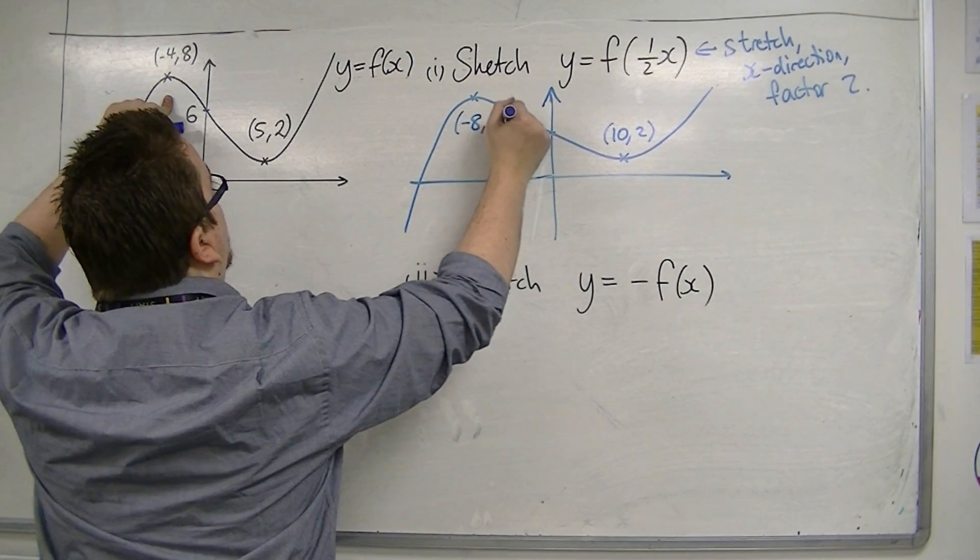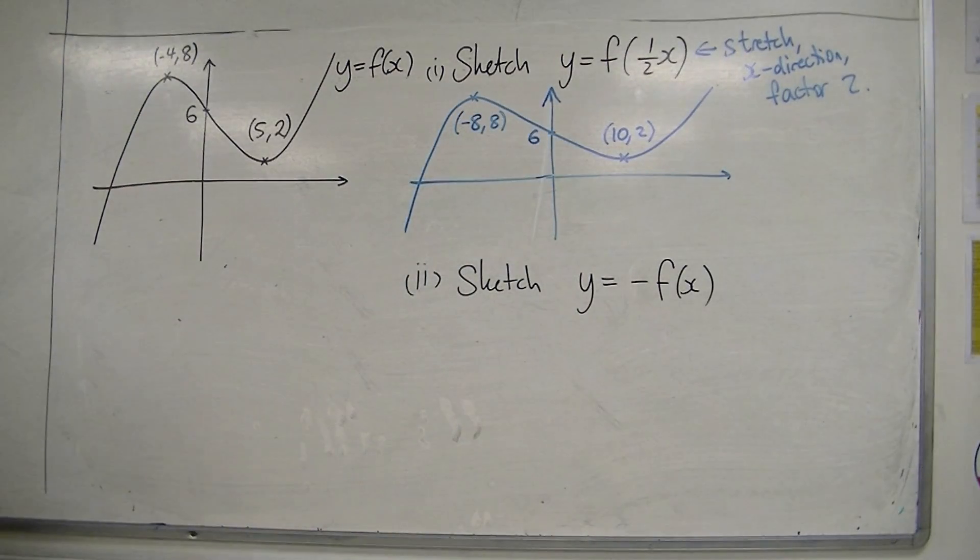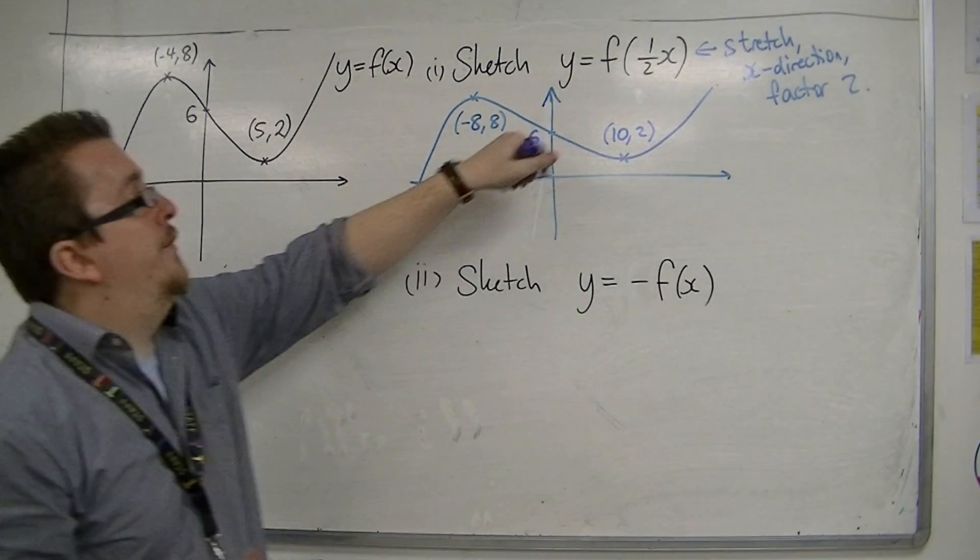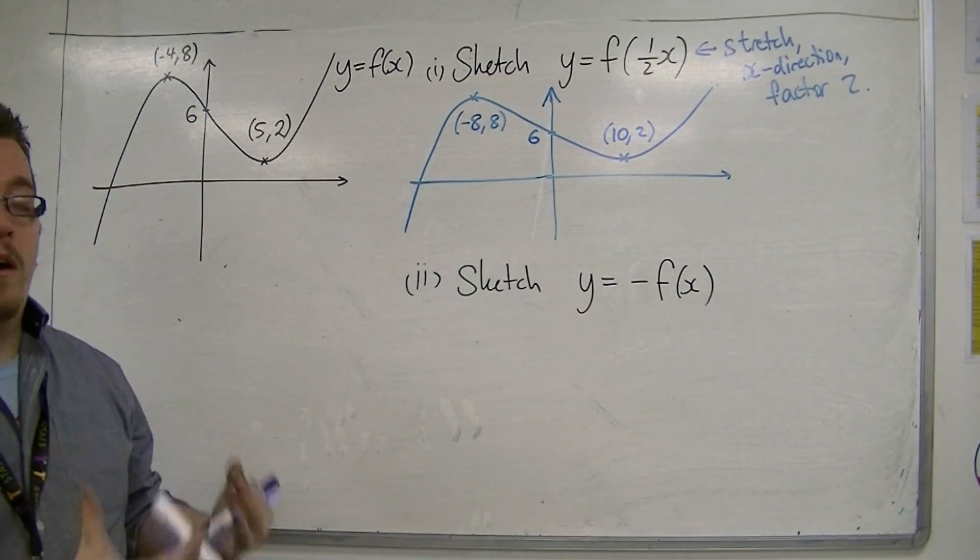So we have minus 8, 8. Okay? And that is a sketch of the curve y equals f of a half x.